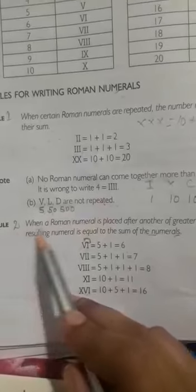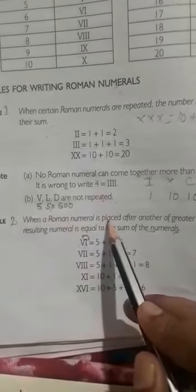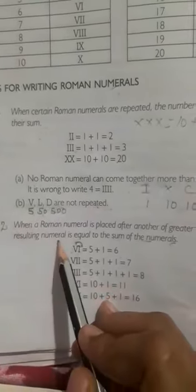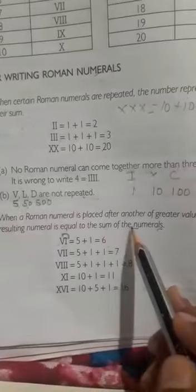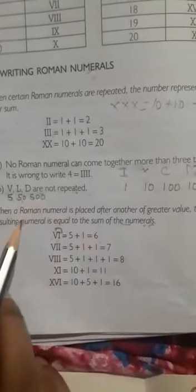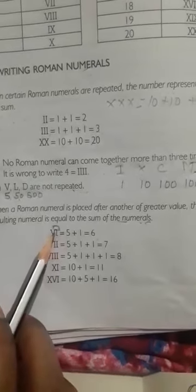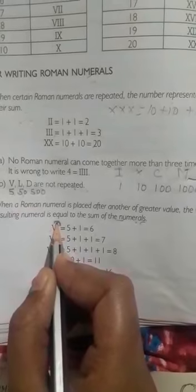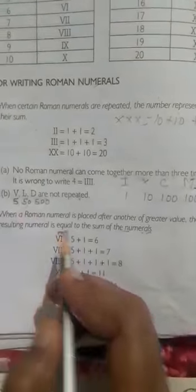Rule 2: Addition. When a Roman numeral is placed after another of greater value, the value of the resulting numeral is equal to the sum of the numerals, in which the smaller number is on the right-hand side. Smaller number on the right-hand side means addition.